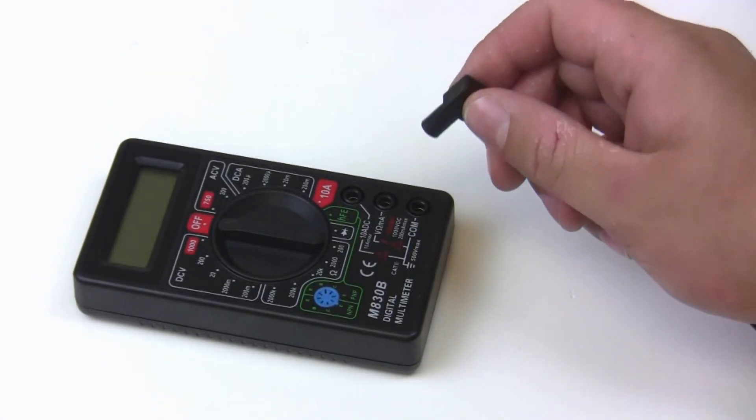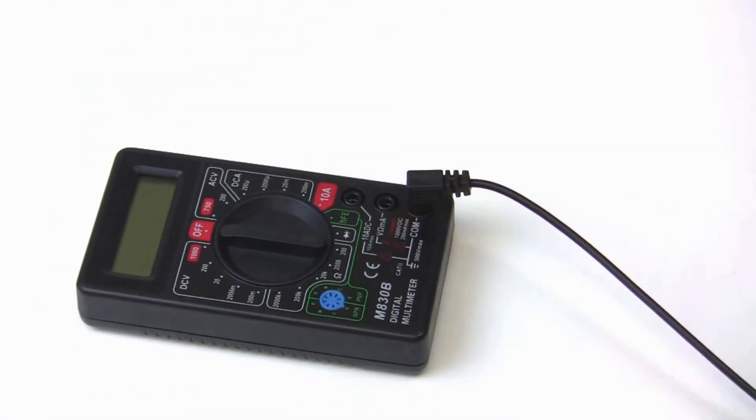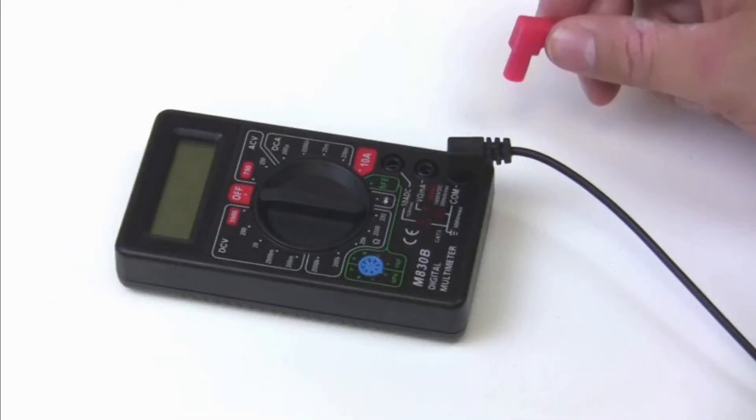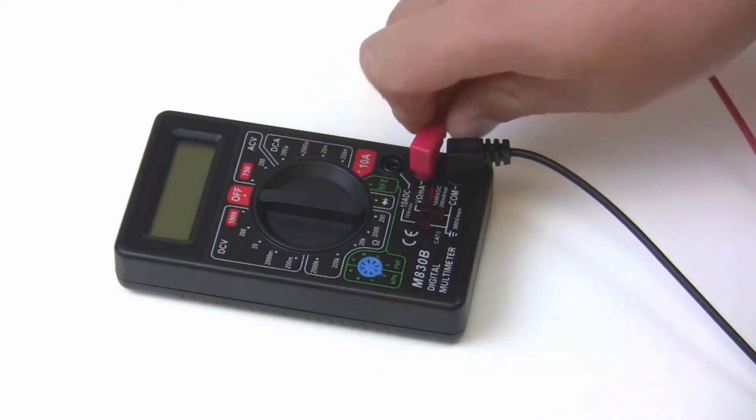Take your black lead, place it into the port marked COM for common. Now grab your red lead, place it in the port marked V for voltage.